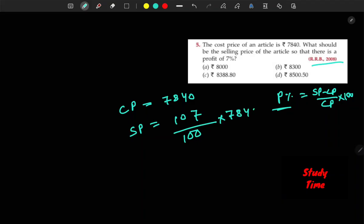We have 7840, so 107 upon 100. The hundreds cancel, so here we multiply these values.